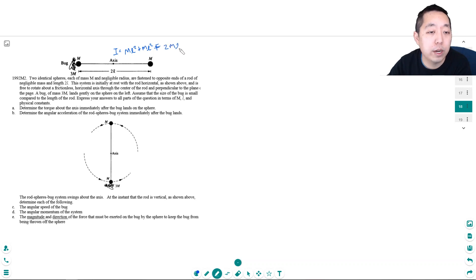So I equals 2ml squared—this is the rotational inertia without the bug. Once the bug lands on it, it's going to be 5ml squared with the bug.